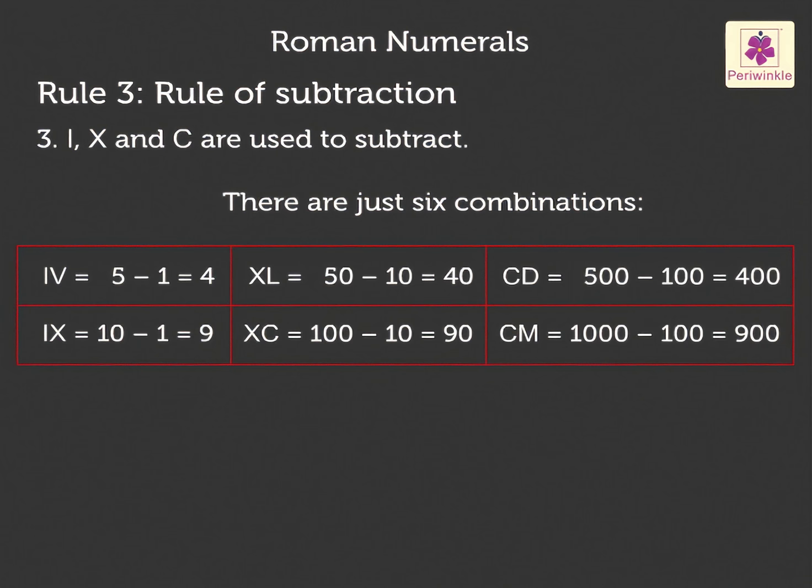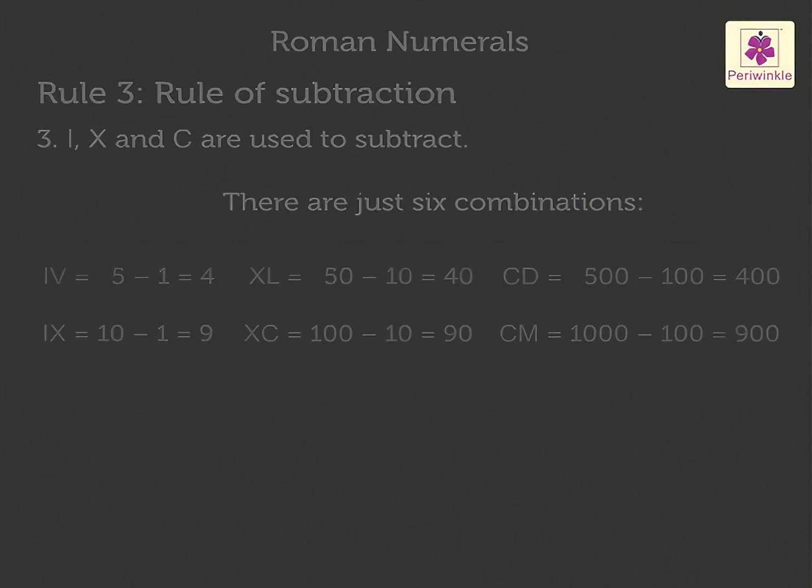Now, if larger Roman numerals are given, how do we read and write them? Look at example 1. What is MCMXXXI equal to? Keeping in mind the rules explained earlier, we first write this number into 1000s, 100s, 10s and 1s as M plus CM plus XXX plus I in order to solve it further.